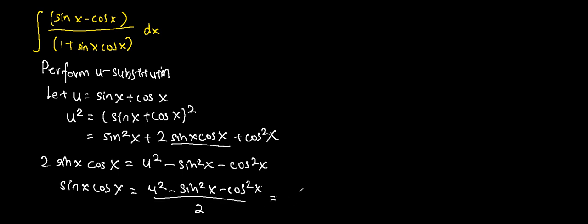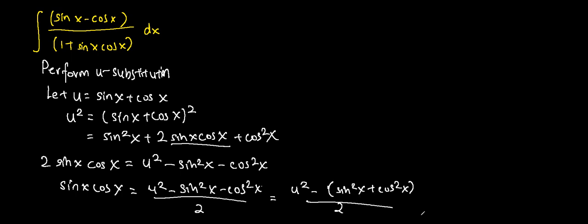This is the same as u squared minus the bracket of sin²x plus cos²x, over 2. We know from trigonometry properties that sin²x plus cos²x equals 1, so this is equivalent to u squared minus 1, over 2.